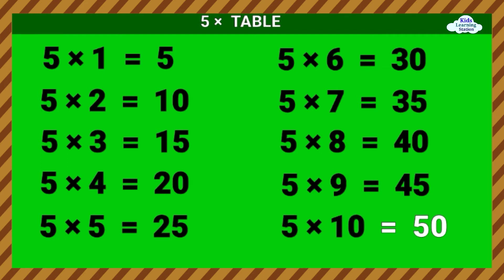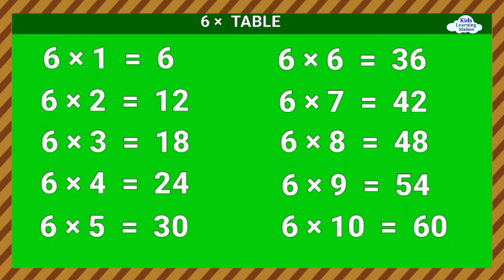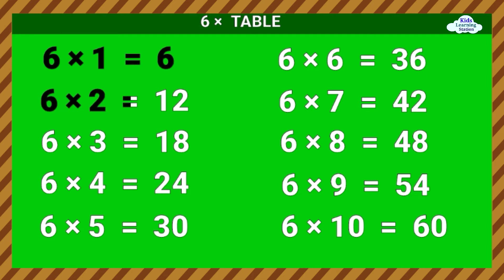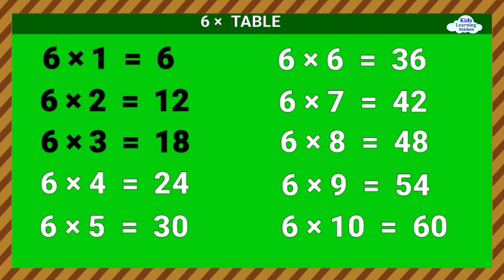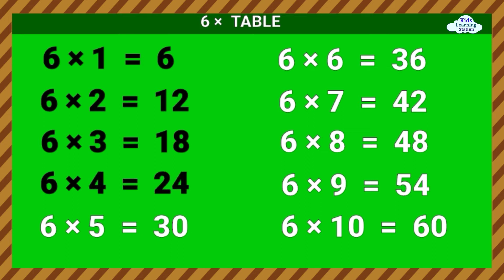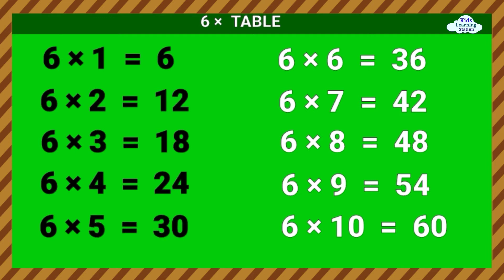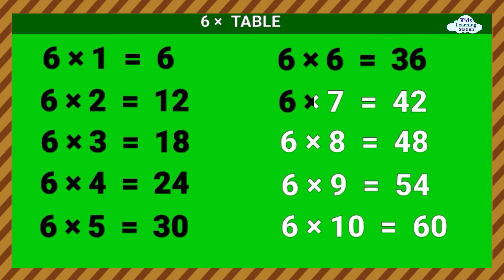5 times 10 equals 50. Six times table. 6 times 1 equals 6. 6 times 2 equals 12. 6 times 3 equals 18. 6 times 4 equals 24. 6 times 5 equals 30. 6 times 6 equals 36. 6 times 7 equals 42. 6 times 8 equals...